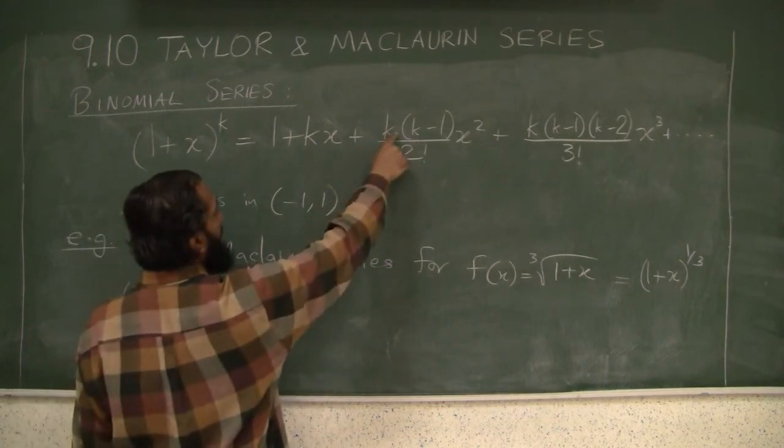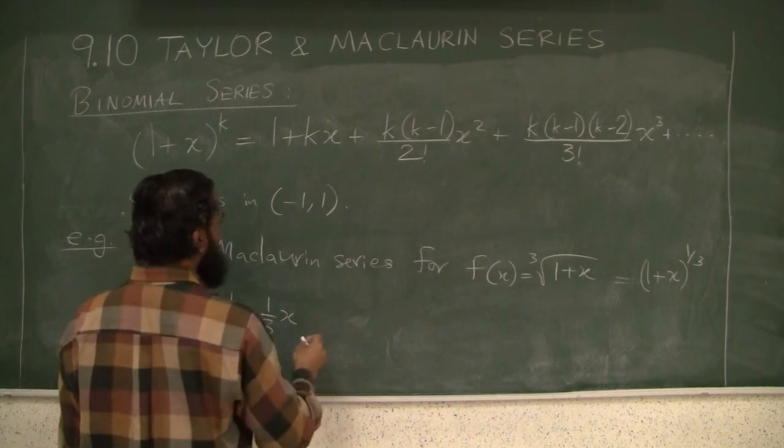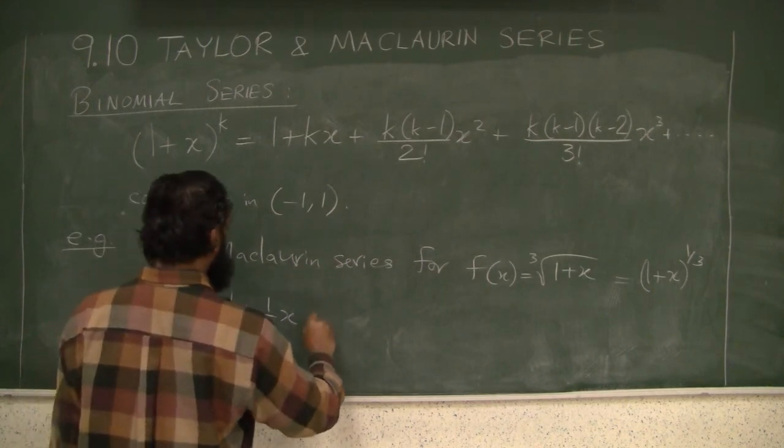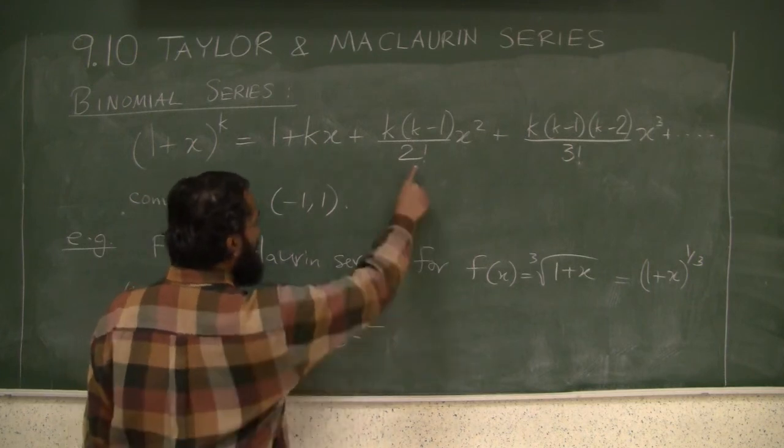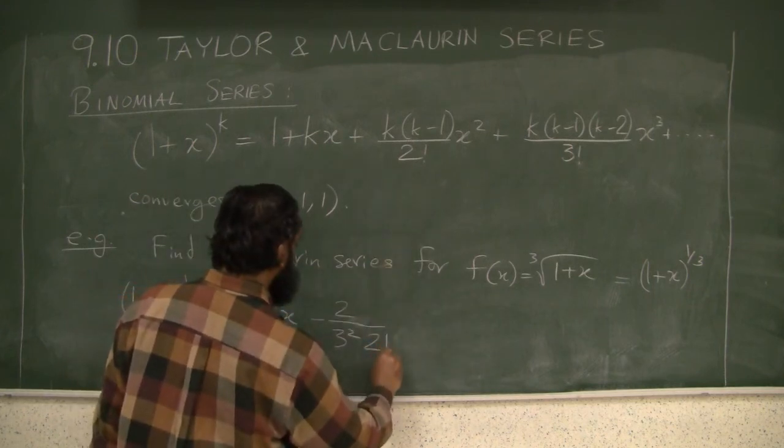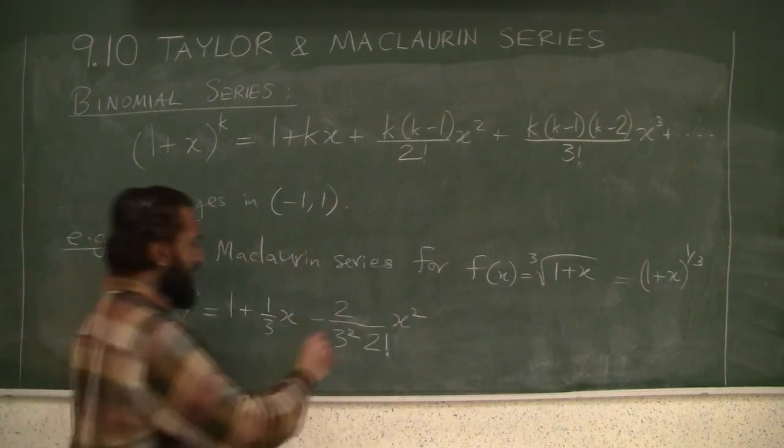Plus 1/3 times (1/3 minus 1), which is negative 2/3, so that's going to give you negative 2 over 3 squared. And you also have the 2 factorial times x squared.